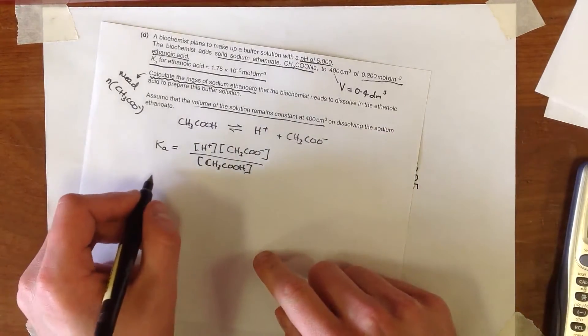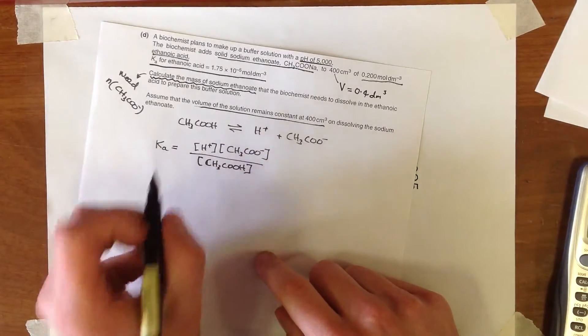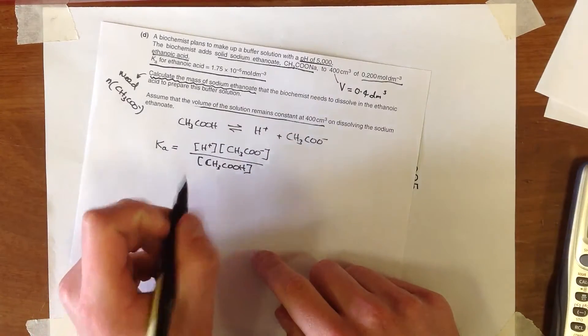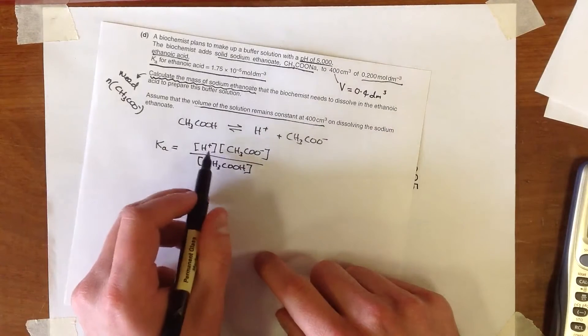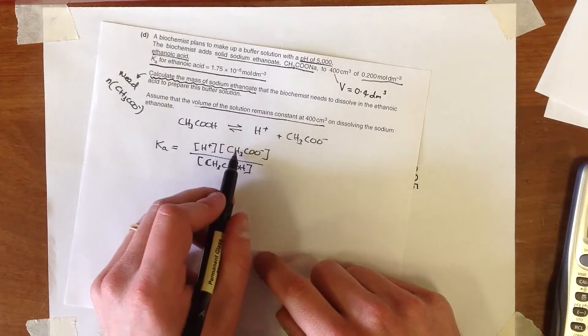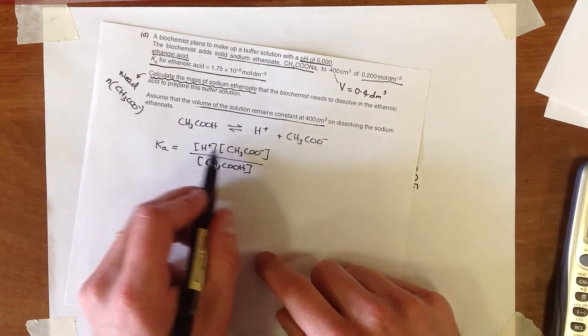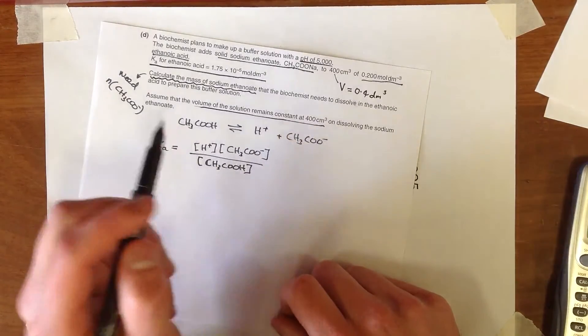So what we would do if it was just a weak acid, there was no sodium ethanoate added, is we would say that the H+ and the ethanoate concentration are identical because they're formed by the same reaction. However,